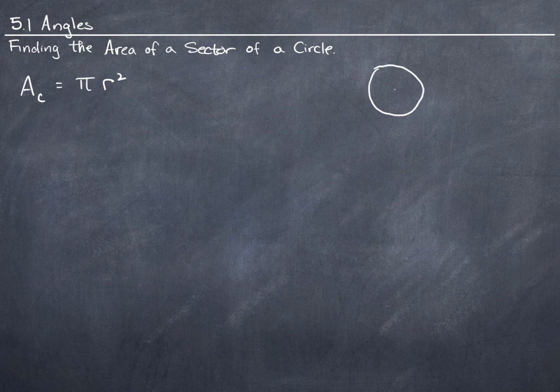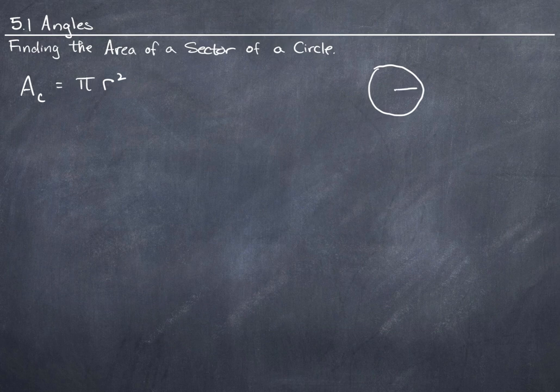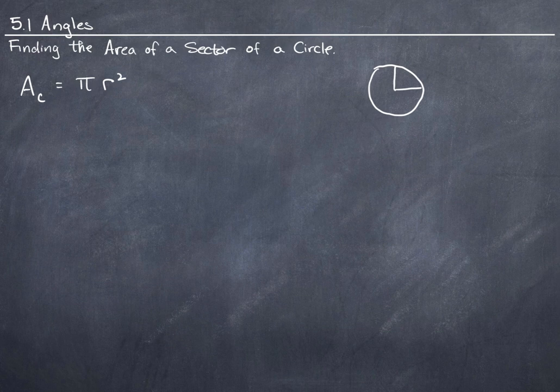Now, a sector of a circle is a piece that gets cut out from that circle. In this case, it would be something like this piece right here.